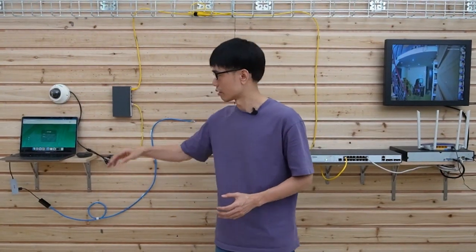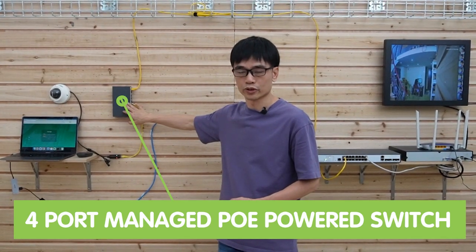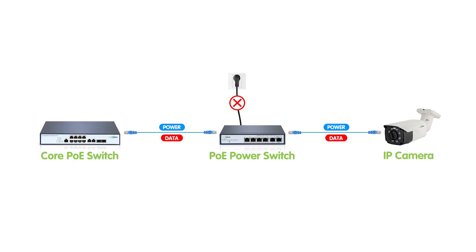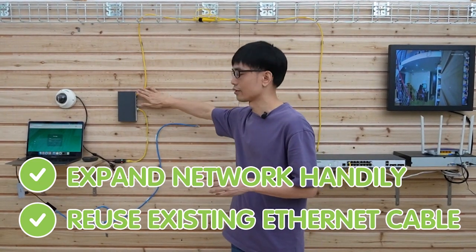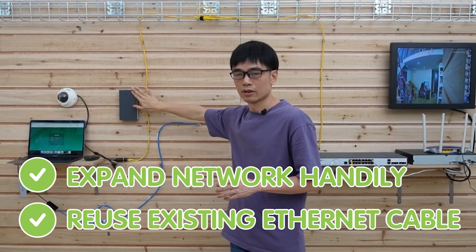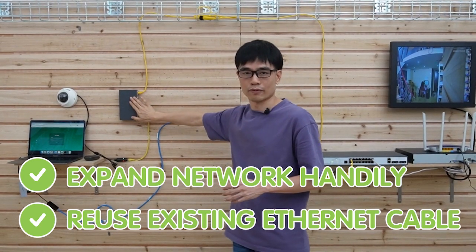This is the 4-port PoE power switch. This switch can receive PoE power from the core switch, so there's no need for a separate power source. At the same time, this switch can still send PoE power to IP cameras or access points. It's also very handy for expanding the network or using Cat5 or Cat6 Ethernet cable to increase the number of RJ45 network ports.